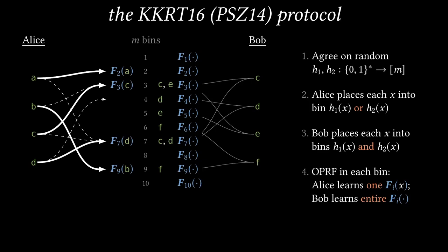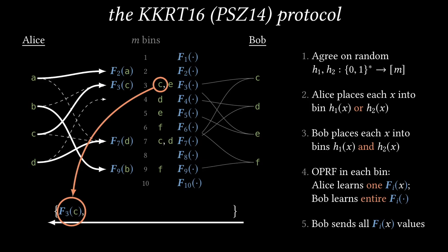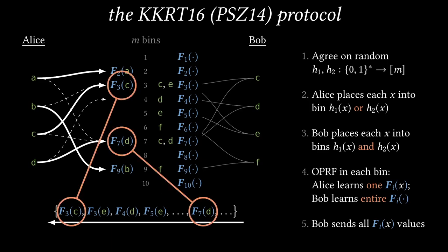Now the parties use batch OPRF to perform an OPRF for each bin. Alice plays the role of OPRF receiver. If she places item X into bin i, then she'll learn Fi(X). If she has no item in a bin, then it doesn't matter which F output she learns, so I haven't included it in this picture. Bob learns the PRF function for each bin, and he can evaluate these PRFs on any input. Bob can compute a PRF output for each item in each bin, and send this PRF value to Alice. Since each item is in two bins, Bob sends two PRF outputs per item. Alice can compare these PRF outputs to the ones she knows. In this case, she recognizes the outputs F3(C) and F7(D), so she can conclude that C and D are in the intersection. The guarantee of the OPRF is that all other PRF outputs look random to Alice.